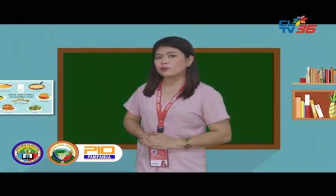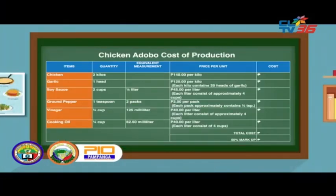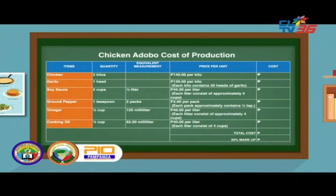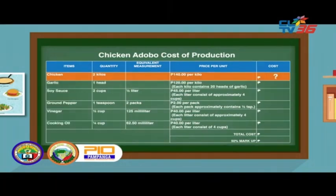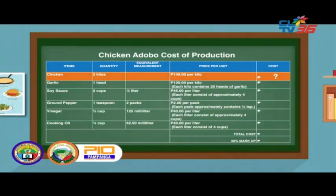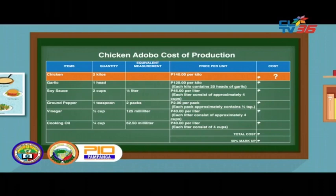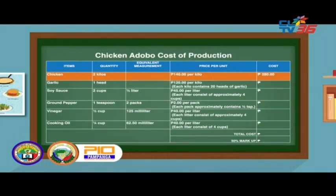Here are the chicken adobo ingredients: chicken, garlic, soy sauce, ground pepper, vinegar, and cooking oil. Princess will need 2 kilos of chicken, and the price per unit is 140 pesos per kilo. Since she will need 2 kilos, multiply 2 by 140. Therefore, the cost of 2 kilos of chicken is 280 pesos.